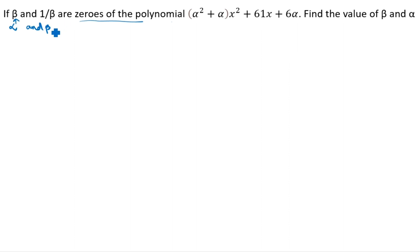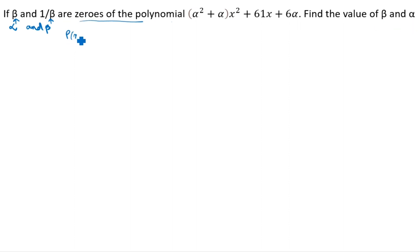Instead of alpha we will take beta, and instead of beta we will take 1 by beta. p(x) is equal to (alpha squared plus alpha) x squared plus 61x plus 6 alpha.